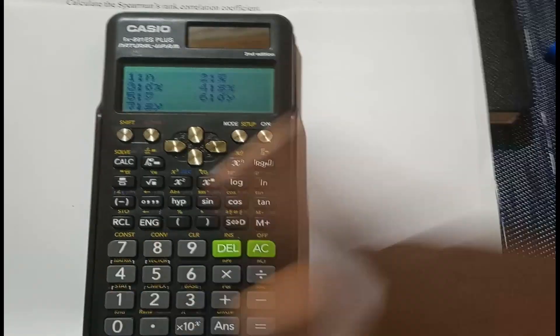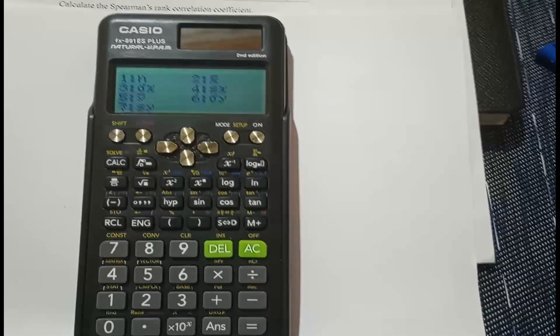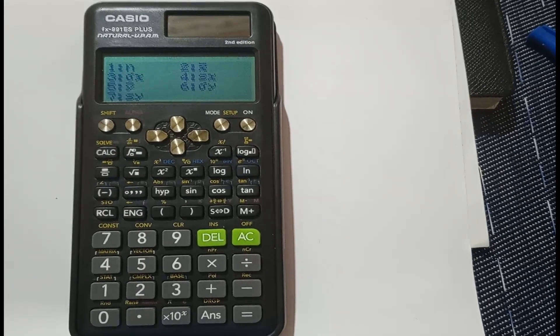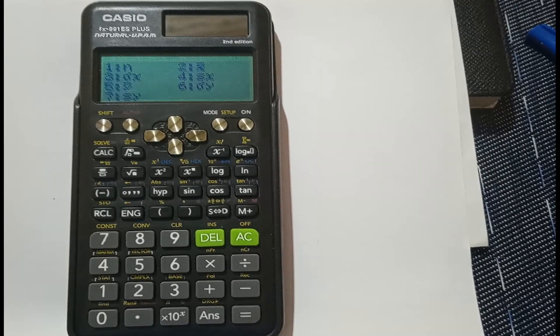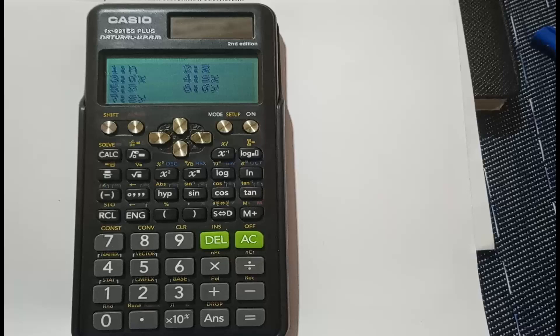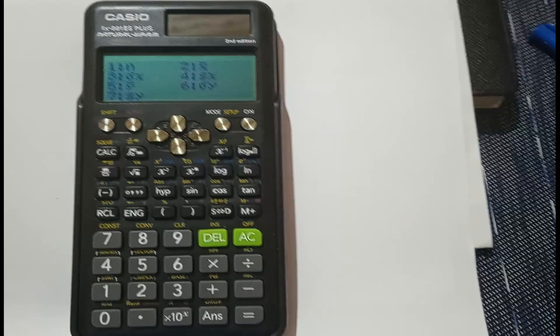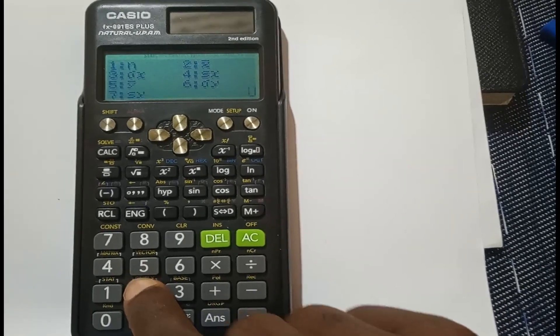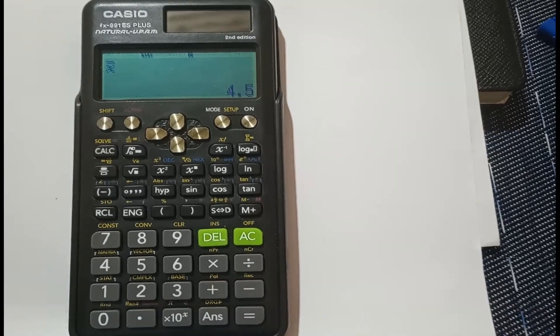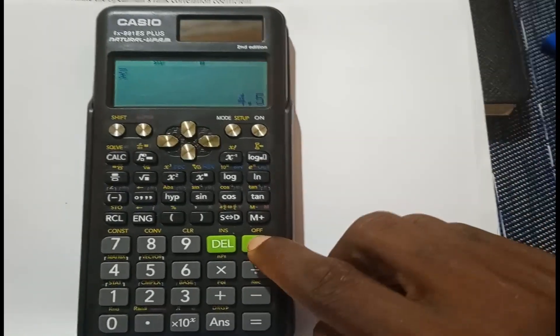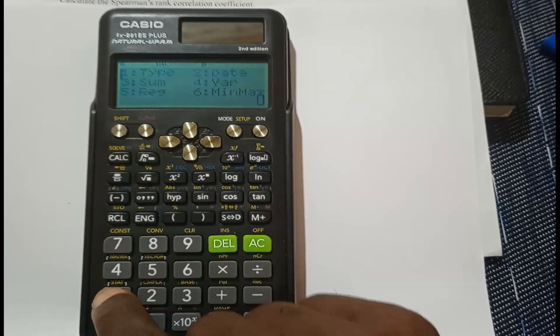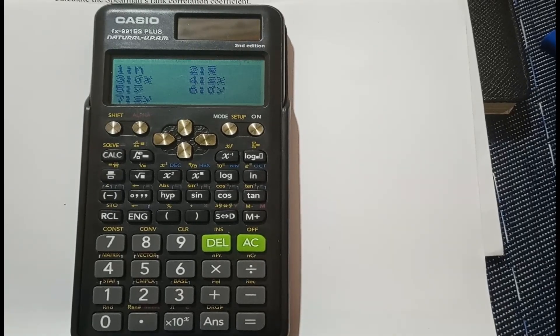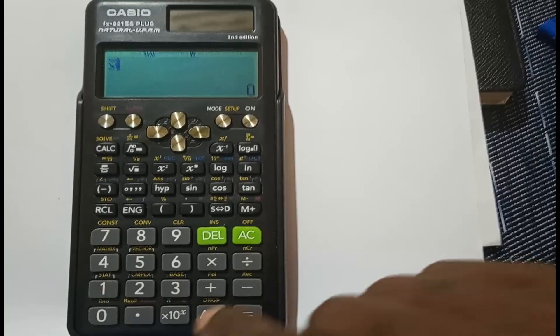Back to VAR, number 4. If we're doing a scatter diagram and looking for the line of regression, we need the centroid coordinates. Number 2 is the mean of the x values, which is the x coordinate of the centroid. Press 2 equals, that's 4.5. Go back to AC, SHIFT, statistics, VAR number 4. Then use 5 to find the mean of the y values, which is the y coordinate. Equals, that is 63.